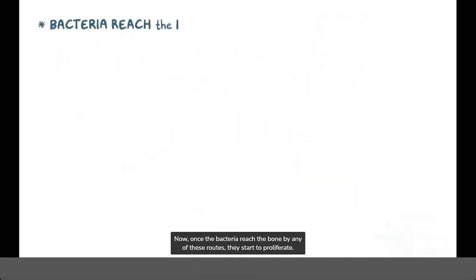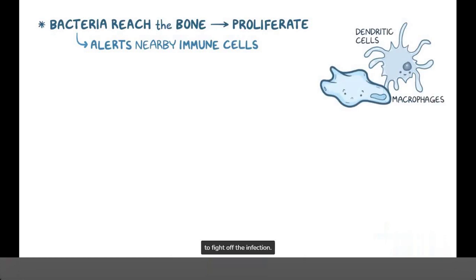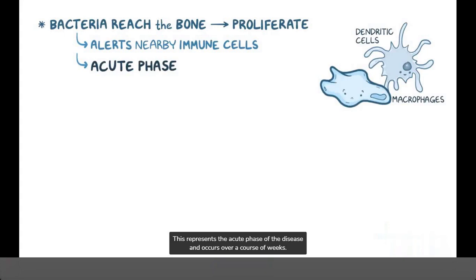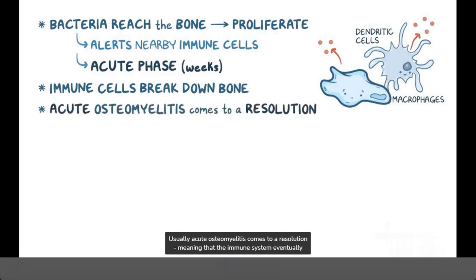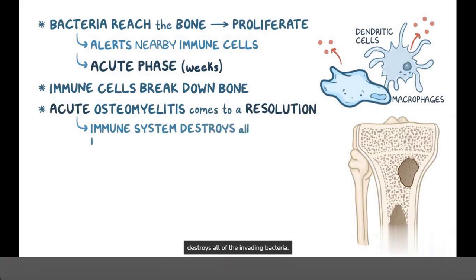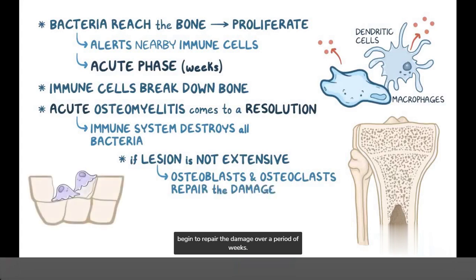Once the bacteria reach the bone, they start to proliferate. This alerts nearby immune cells, specifically dendritic cells and macrophages, that try to fight off the infection. This represents the acute phase of the disease and occurs over a course of weeks. The immune cells release chemicals and enzymes that break down bone and cause local destruction. Usually, acute osteomyelitis comes to a resolution, meaning the immune system eventually destroys all of the invading bacteria. If the lesion is not extensive and there's viable bone, the osteoblasts and osteoclasts begin to repair the damage over a period of weeks.